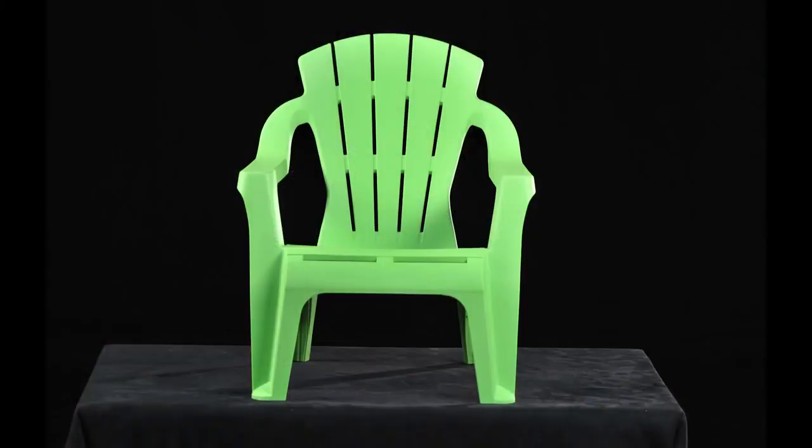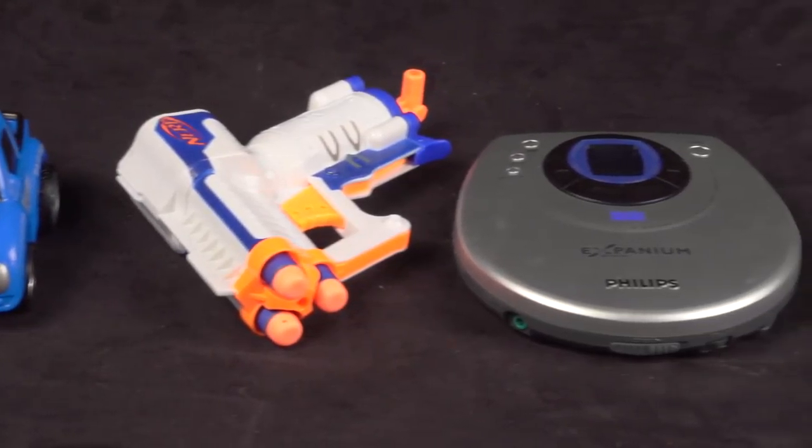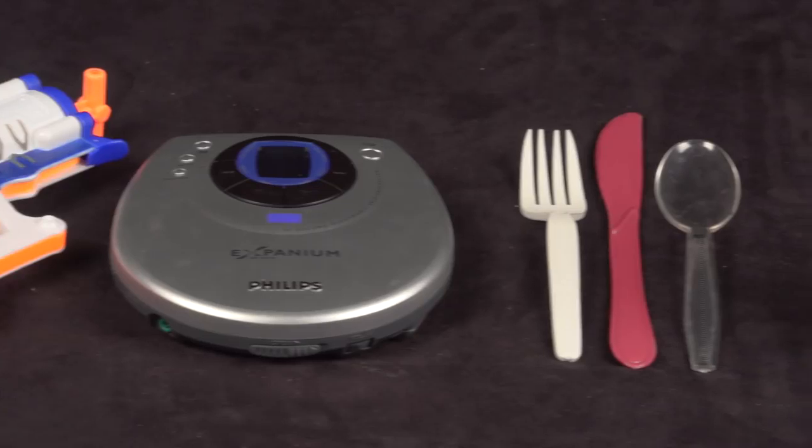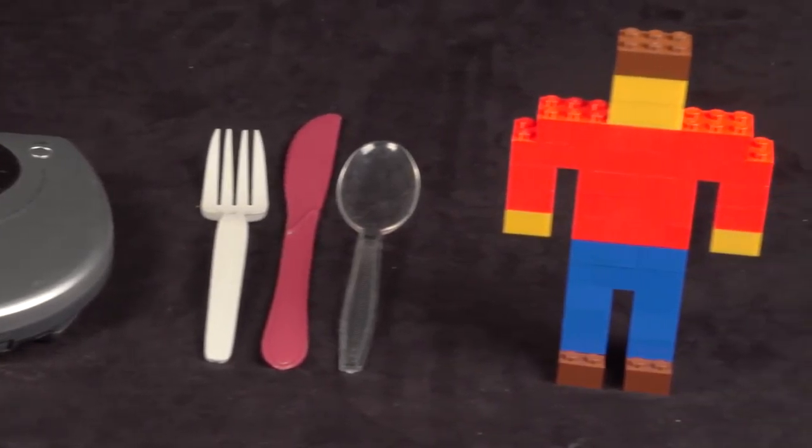Injection molding is the most common method for mass manufacturing plastic products. Examples include chairs, toys, cases for consumer electronics, disposable cutlery, and my favorite, Lego bricks.